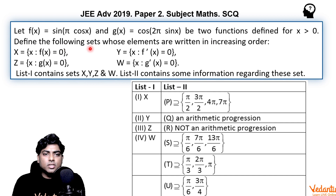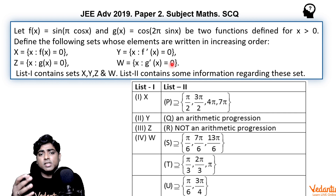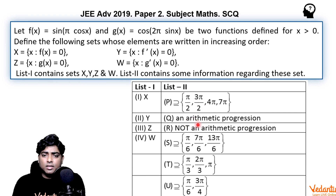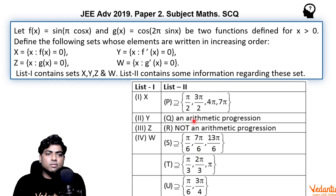All solutions for sets X, Y, Z, and W are written in increasing order. We have to analyze whether those solutions form an AP or not, and whether they are supersets of elements P, Q, R, S, T given in List 2. We need to match the entries of List 1 with one or more entries of List 2.